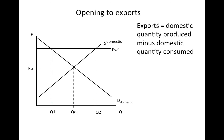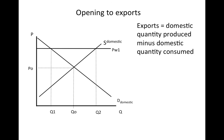The difference between the quantity produced domestically and the quantity consumed domestically — that horizontal distance — represents the exports. You can also look at this on the quantity axis; that blue distance is the same gap, and both reflect the exports of this product into the international market.